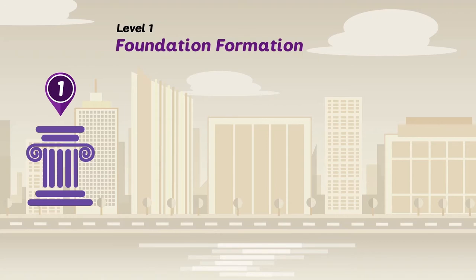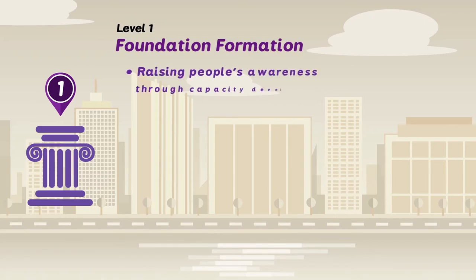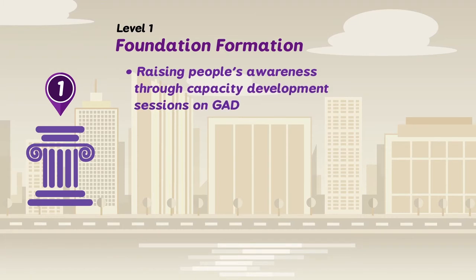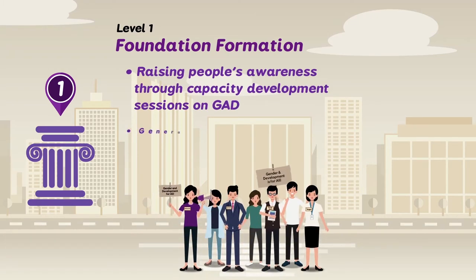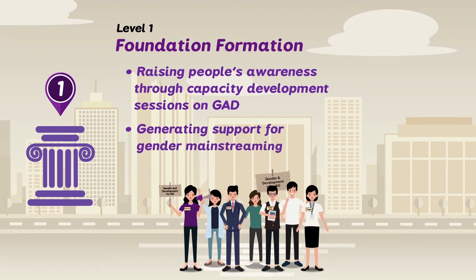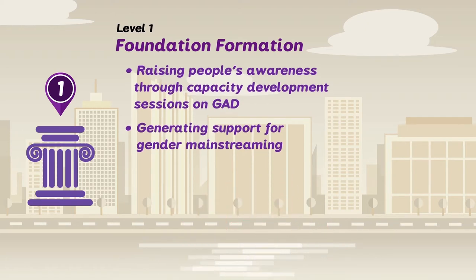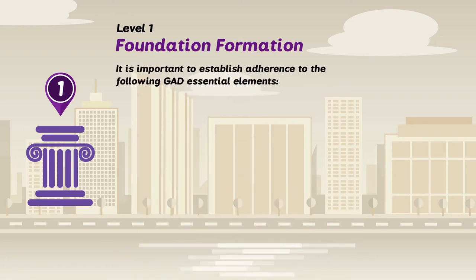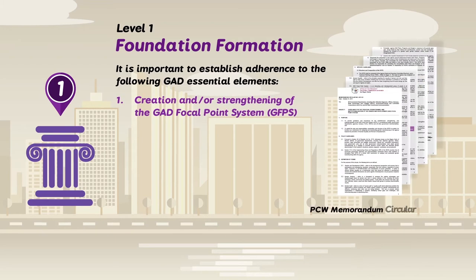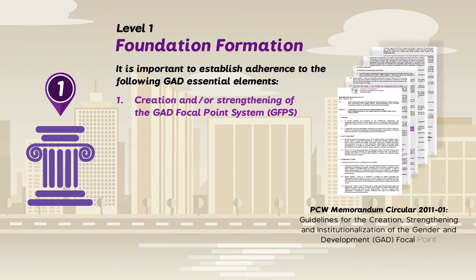Level 1: Foundation Formation. The organization's level of gender awareness is first heightened by raising people's awareness through capacity development sessions on GAD and generating support for gender mainstreaming. In this level, it is important to establish four GAD essential elements, beginning with the creation and strengthening of the GAD focal point system.